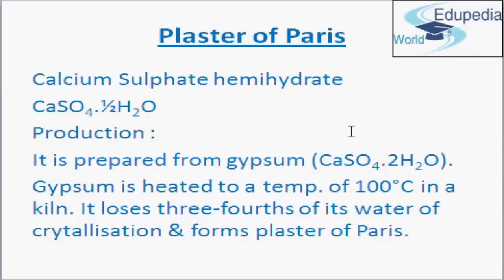Now we will discuss plaster of Paris. Plaster of Paris is calcium sulfate hemihydrate, or calcium sulfate half hydrate. The formula of plaster of Paris is CaSO4·½H2O. The name plaster of Paris comes from the fact that it was first made by heating gypsum, which was mainly found in Paris. Plaster of Paris is prepared from gypsum, and the chemical formula of gypsum is CaSO4·2H2O, or calcium sulfate dihydrate.